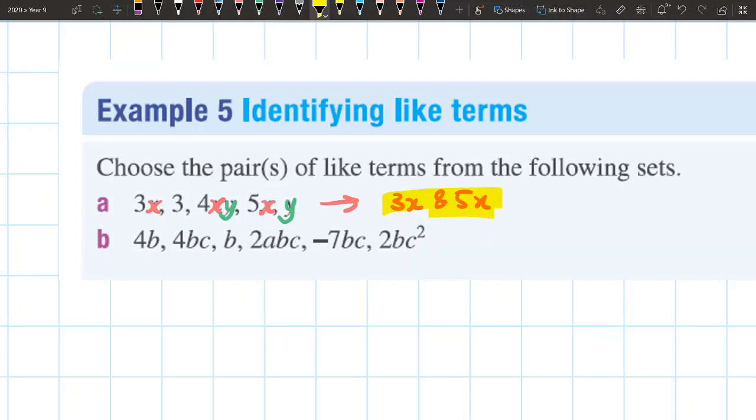Let's do the exact same for the second one. So what I'm going to do, I've got 4b, 4bc, b, 2abc, -7bc, and 2bc².